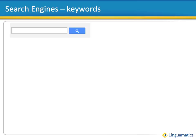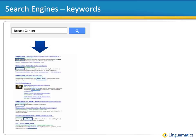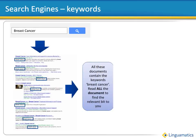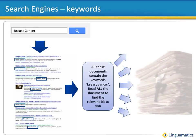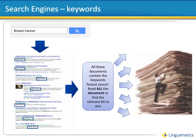Most search engines take this approach and it's important to understand what is going on when you use them. Typically, you type in one or more keywords — in this case, breast cancer — and the search engine then finds all the documents that have those keywords in them. The important thing to understand is that the search engine brings back links to the documents. It tells you that this list of documents here all contain the words breast and cancer. Then it's up to you to read through each document and decide whether they are of relevance.